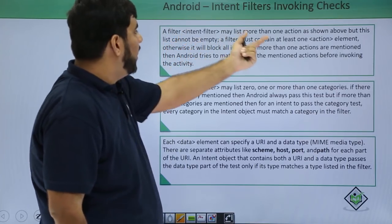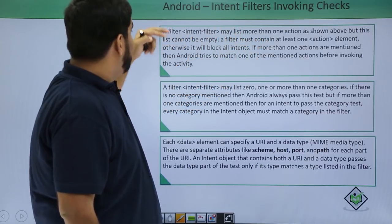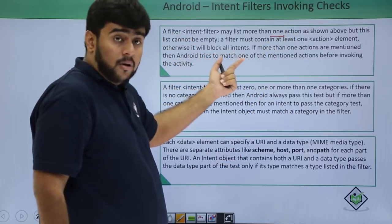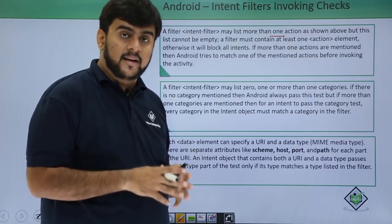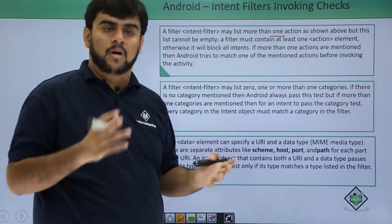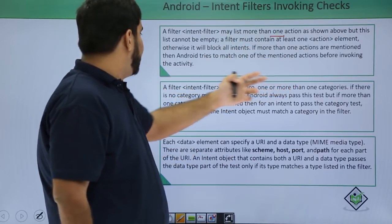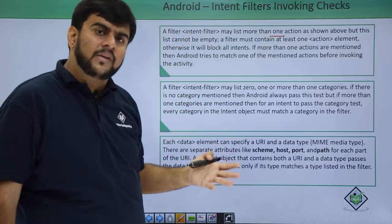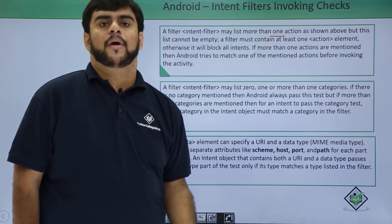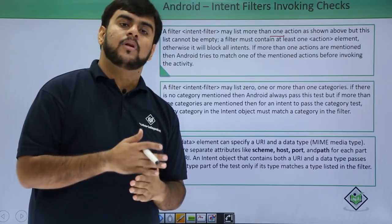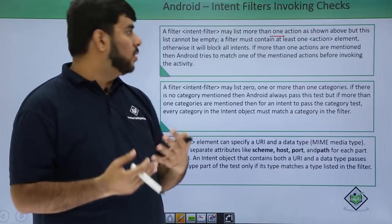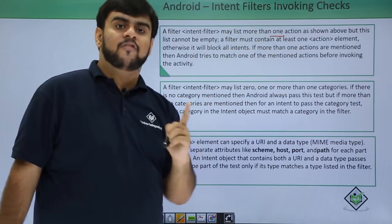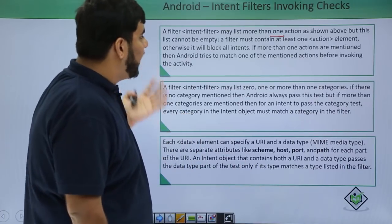The first one being the action, we have to make sure that there is an action because this list cannot be empty. There has to be at least one action otherwise it will block all intents. Remember if your activity is not having any intent action filter in it then it would block all the intents. If there are more than one actions then Android tries to match one of them. At such point in time, maximum is preferred but even if one matches then it opens up the activity.